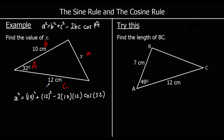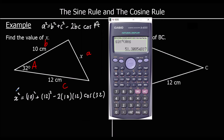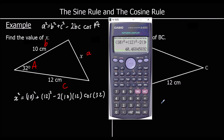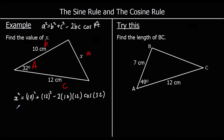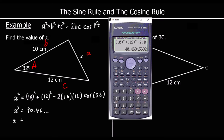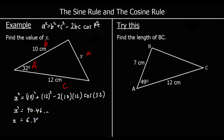We can type the whole right side into the calculator — that will tell us what x squared is. So 10 squared plus 12 squared minus 2 times 10 times 12 cos 32 — so x squared is 40.46 and so on. But we don't want x squared, we want x, so to get rid of the squared we square root. Square root the answer, and to two decimal places that's 6.36 centimetres.